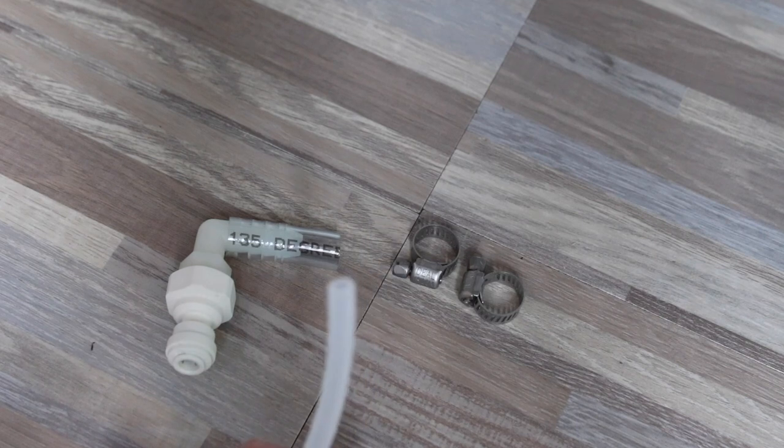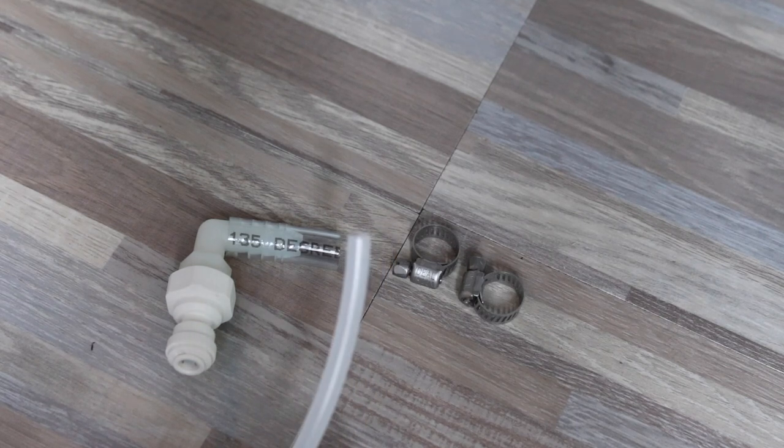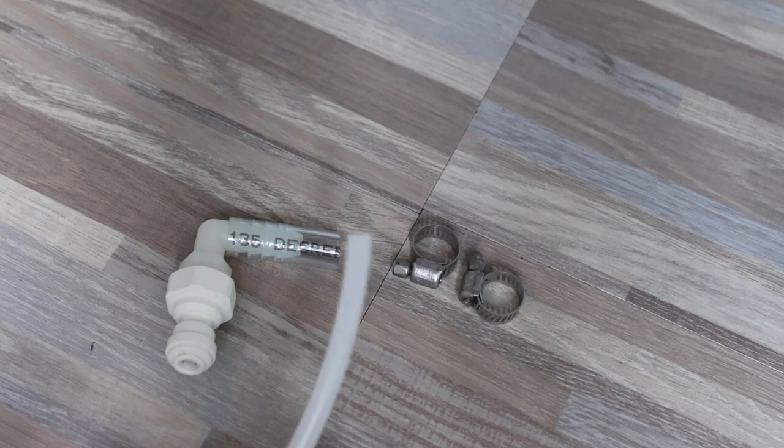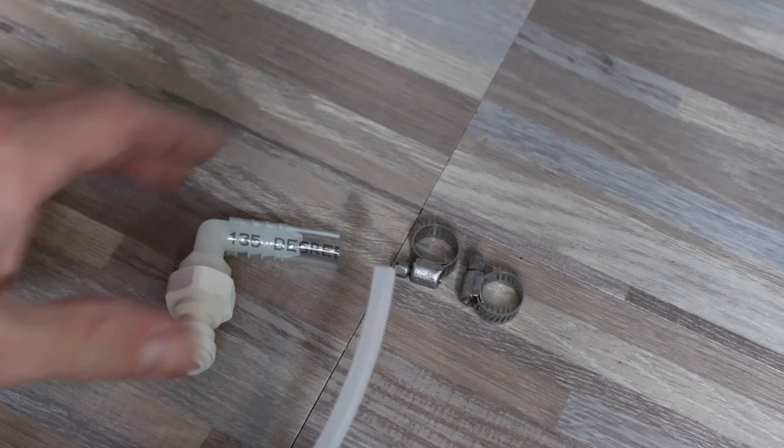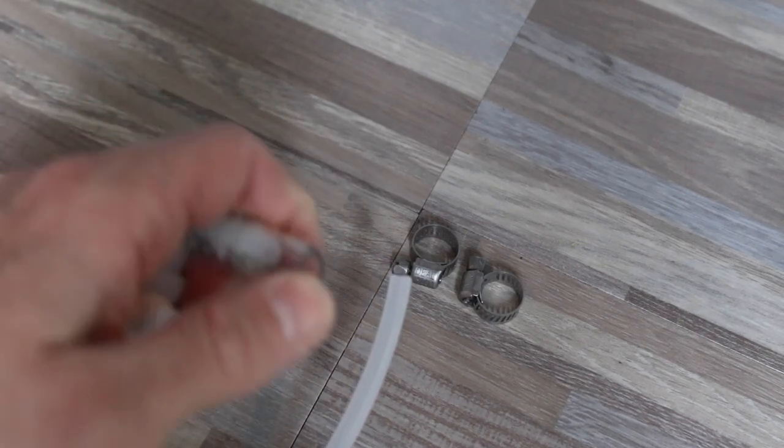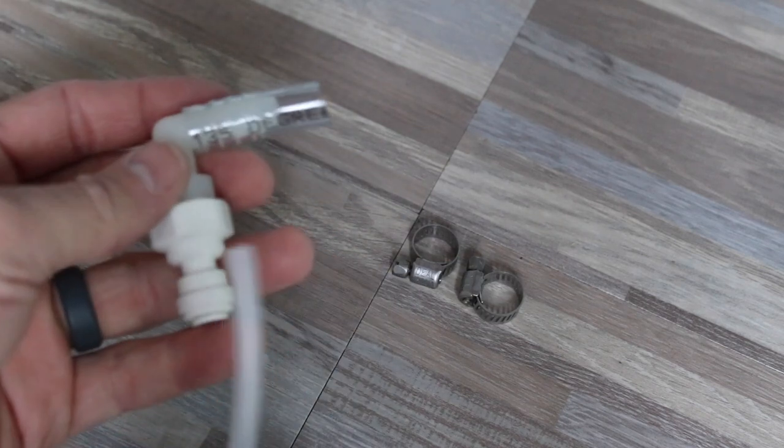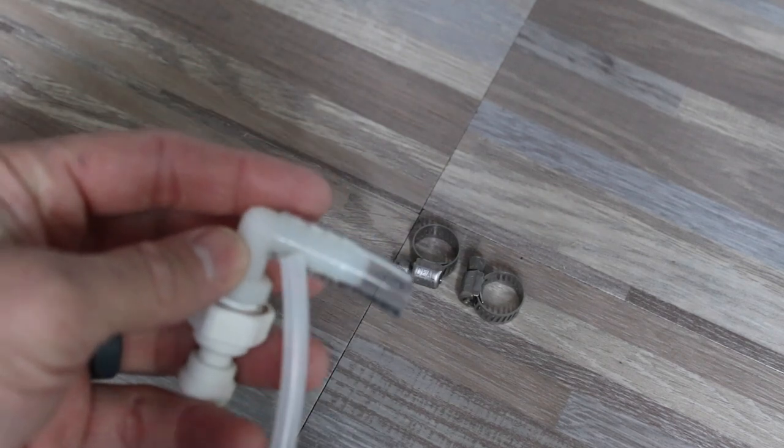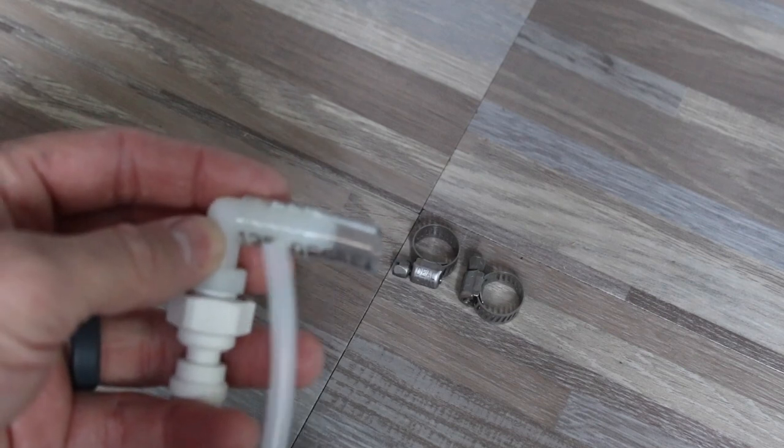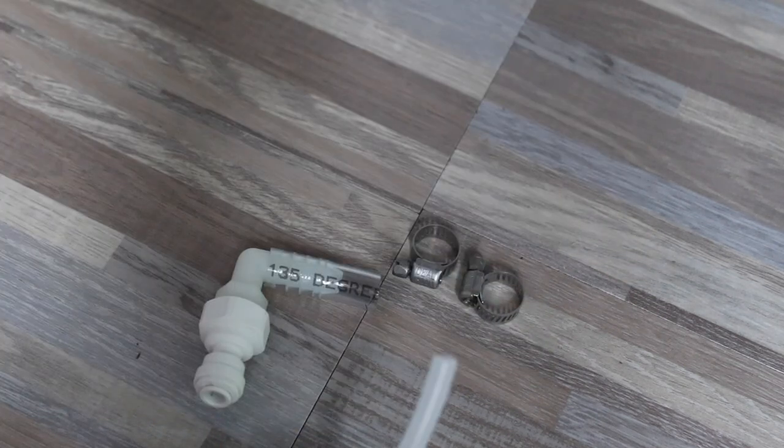Now in my instance, I needed to convert this nylon tubing that the faucet and the tank will use to a barbed fitting that the pump uses. So I have this adapter I made up using two fittings from the hardware store and a short bit of vinyl tubing and two hose clamps.